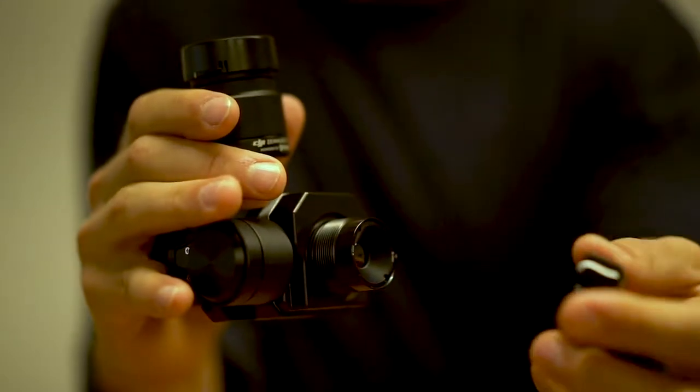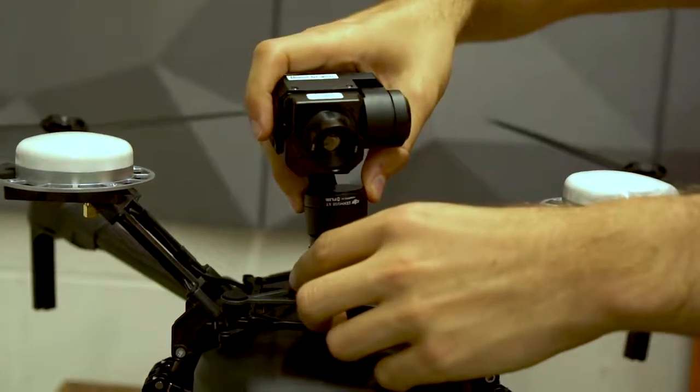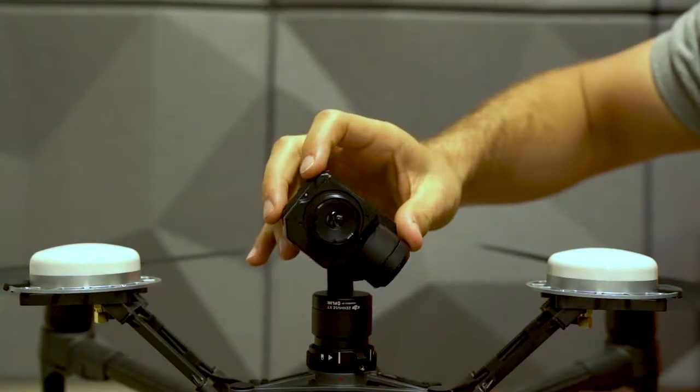The XT FLIR is a special order from DJI. There are up to 28 different configurations of the camera. Users can select between sensor sizes, which translate into different resolutions on the screen.